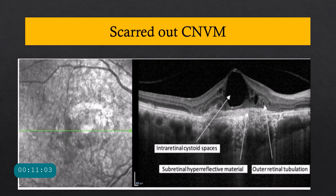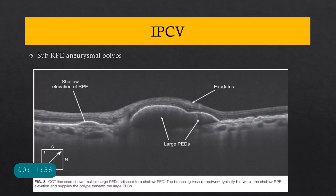How do you recognize a scarred-out CNVM on OCT — whether from treatment or spontaneous scarring? Three features: first, large cystic spaces indicating an old CNVM; second, hyperreflectivity that is much greater than in an active CNVM; and third, photoreceptors that have degenerated and taken a tubular configuration — called ORT, or outer retinal tubulation. These features together indicate a scarred-out CNVM.